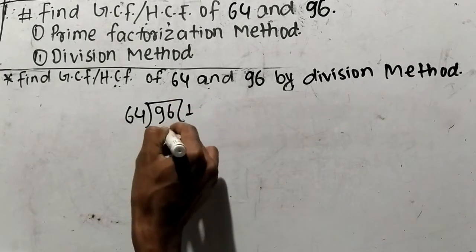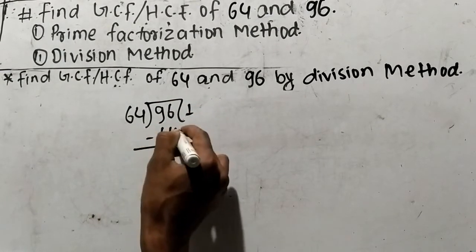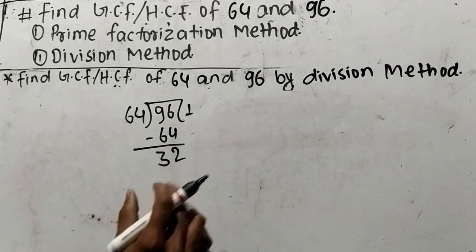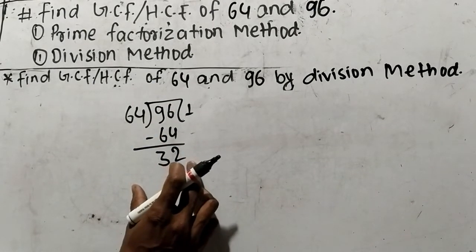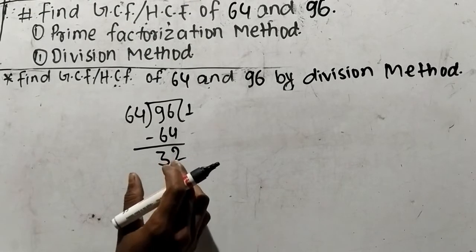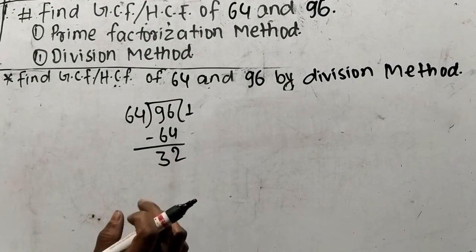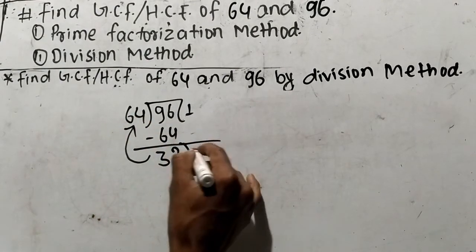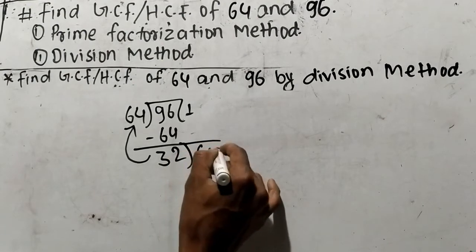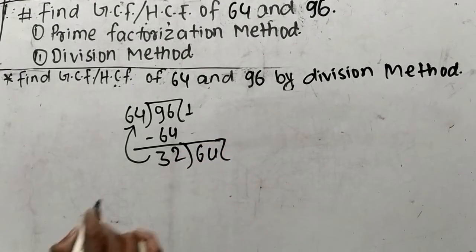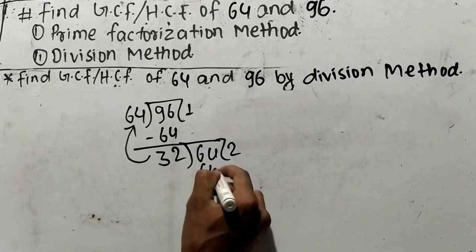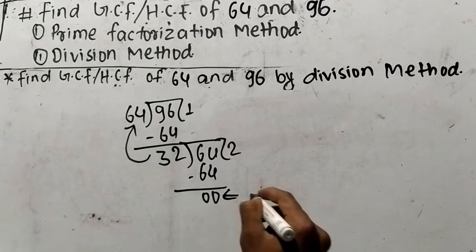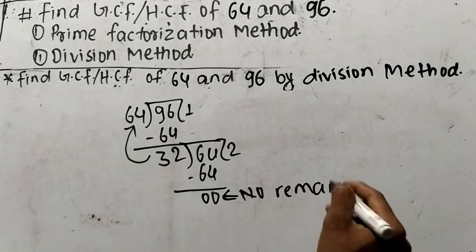64 times 1 means 64. Subtracting: 96 minus 64 gives us 32, so 32 comes as remainder. When a remainder comes while finding out GCF or HCF by division method, we have to again divide the divisor by the remainder. So 64 is divided by 32, and 32 times 2 means 64, so while subtracting we get no remainder.